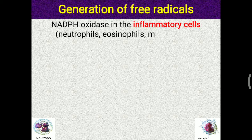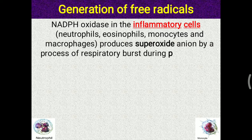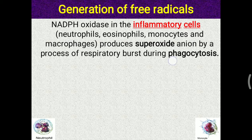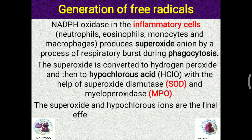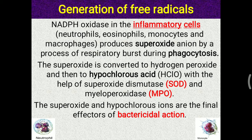NADPH oxidase is produced by inflammatory cells — white blood cells such as neutrophils, eosinophils, monocytes, and macrophages. These cells produce superoxide anion by the process of respiratory burst during phagocytosis. Phagocytosis is an important defense mechanism of our body to protect against bacterial infection. The superoxide is further converted into hydrogen peroxide and then to hypochlorous acid by superoxide dismutase and myeloperoxidase. The superoxide and hypochlorous ions generated in this respiratory burst are the final effectors of bactericidal action.